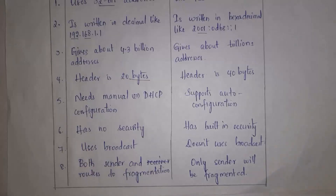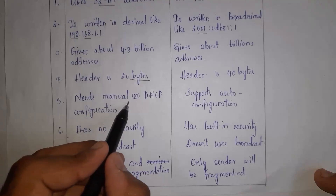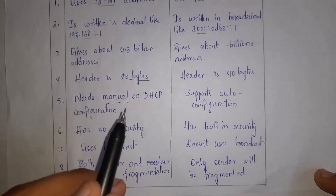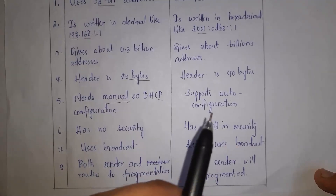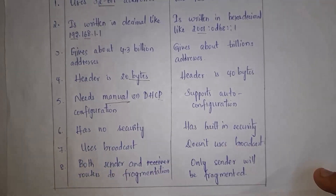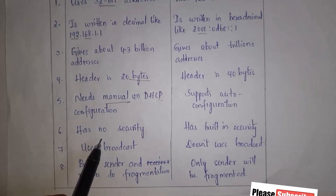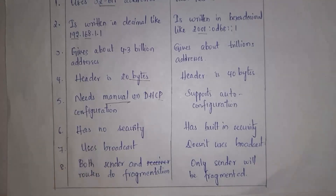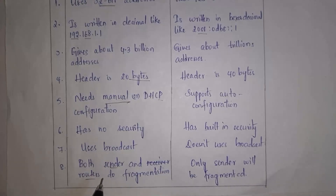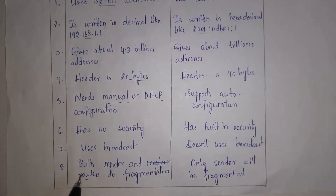We can give IPv4 addresses to devices manually or automatically — manually by the user or automatically by a DHCP server. Whereas IPv6 supports auto-configuration. IPv4 has no built-in security, whereas IPv6 has built-in security. IPv4 supports broadcast, whereas IPv6 does not support broadcast. Regarding fragmentation — dividing data into pieces — in IPv4 both the sender and routers perform fragmentation, whereas in IPv6 only the sender performs fragmentation.